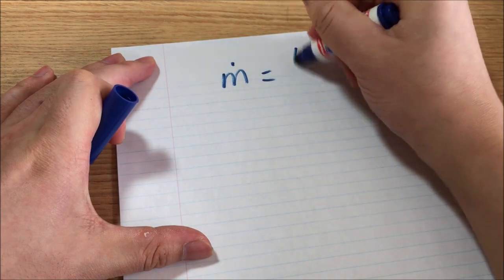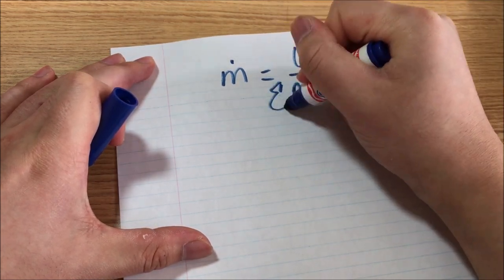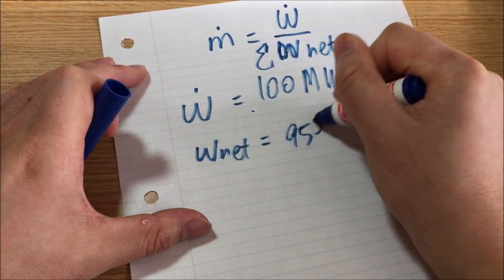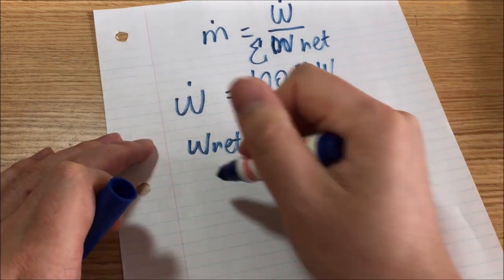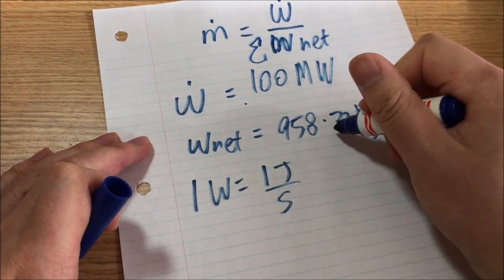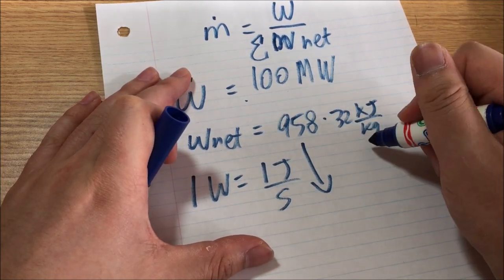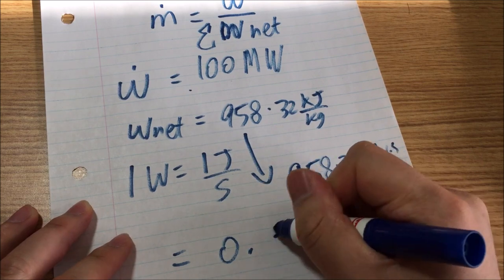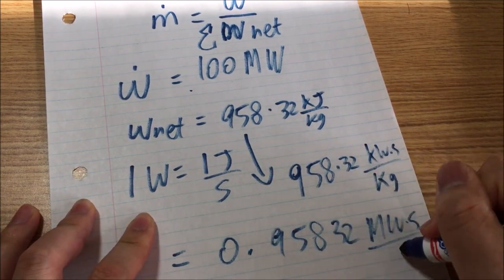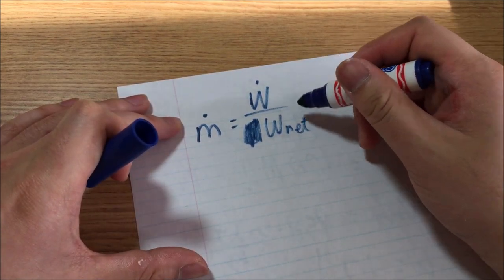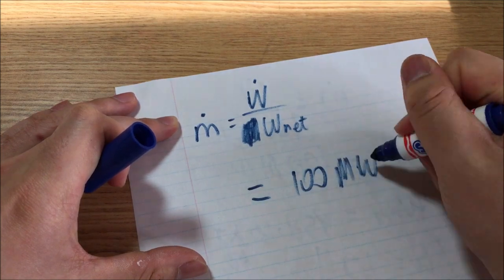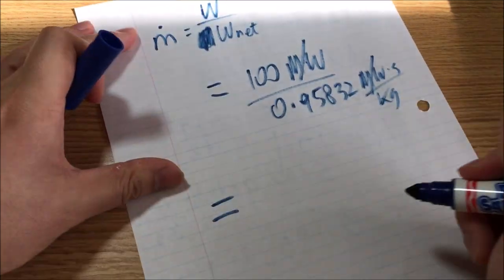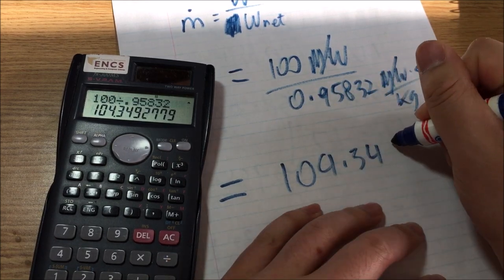To solve for the mass flow rate, we will do the net power over the net work. The net power is given as 100 megawatts and the net work is 958.32 kilojoules per kilogram. Remember, 1 watt equals 1 joule per second, so 958.32 kJ/kg equals 958.32 kilowatt-seconds per kilogram. Therefore, 100 megawatts over 958.32 megawatt-seconds per kilogram equals 104.34 kilograms per second.